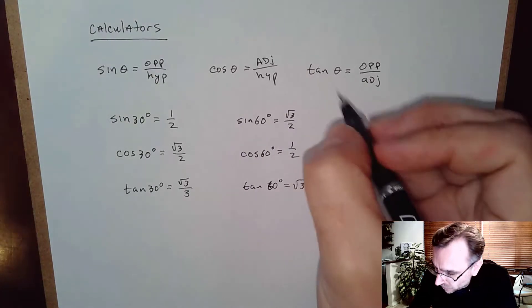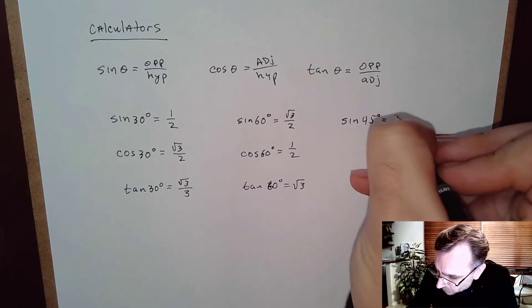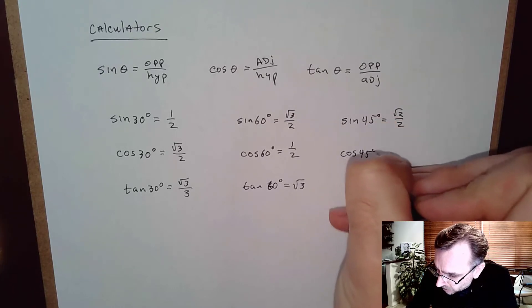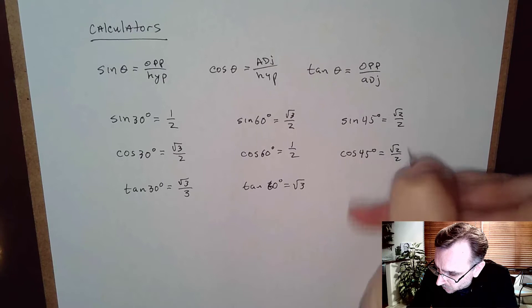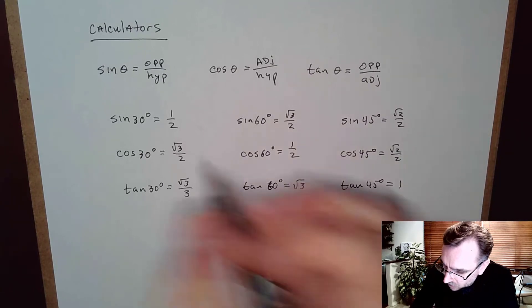The last special angle is 45°. Sine of 45° equals √2/2, cosine of 45° also equals √2/2, and tangent of 45° equals 1.